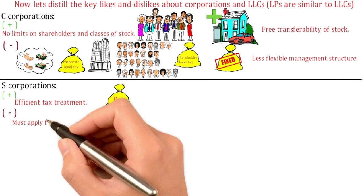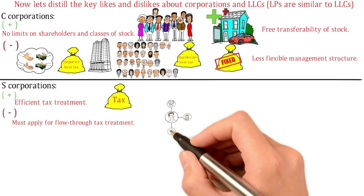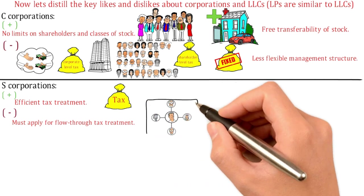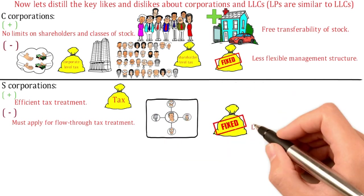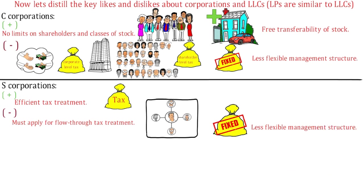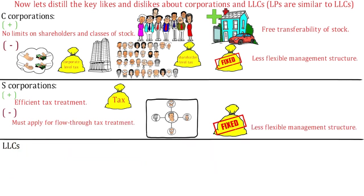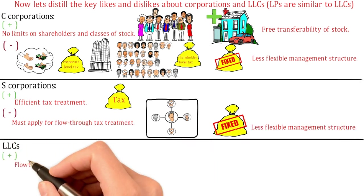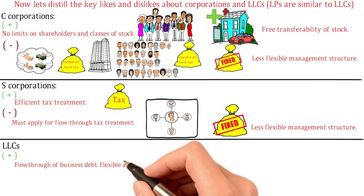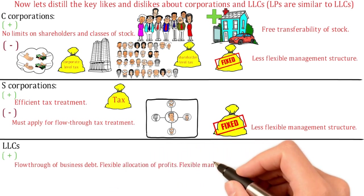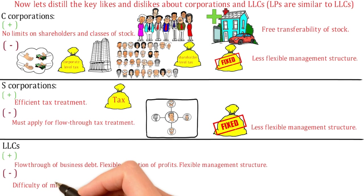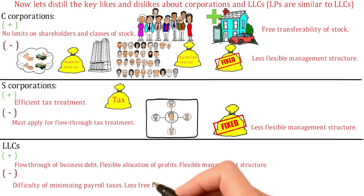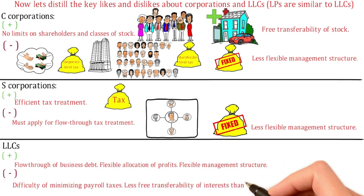S corporations: efficient tax treatment, the best entity for minimizing payroll taxes, must apply for flow-through tax treatment, limits on shareholders and classes of stock, and fixed allocation of profits with less flexible management structure. LLCs: flow-through of business debt, flexible allocation of profits, flexible management structure, but difficulty minimizing payroll taxes and less free transferability of interests than corporate stock.